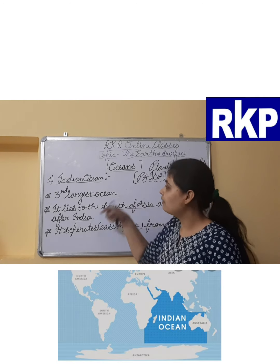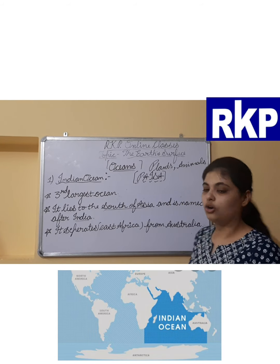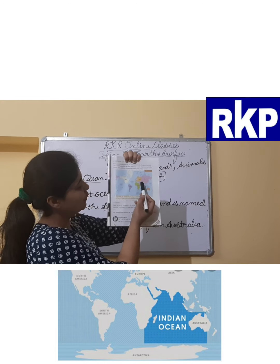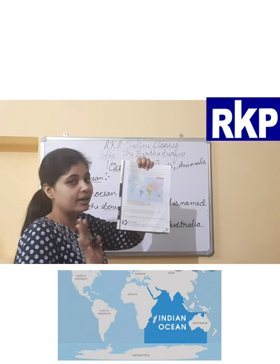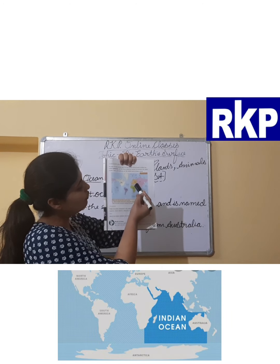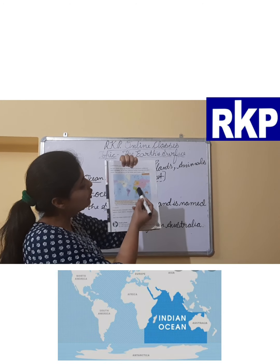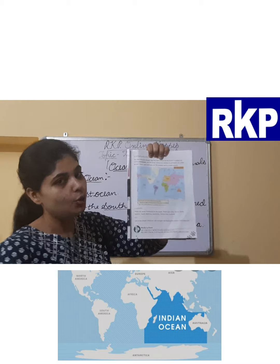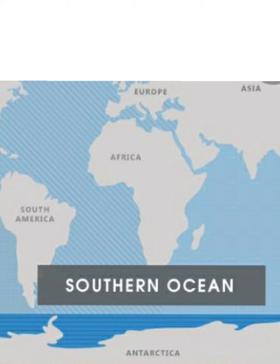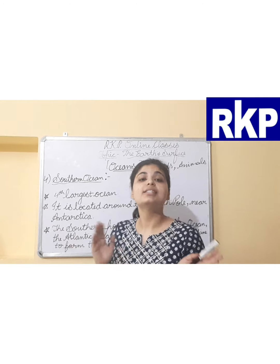Now I stands for Indian Ocean, the third largest ocean of the world. It lies to the south of Asia and is named after India, because at the head of the Indian Ocean there is India. India is situated to the south of the Asian continent, which is why this ocean is named after India.